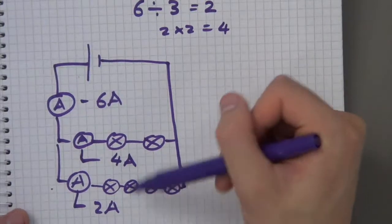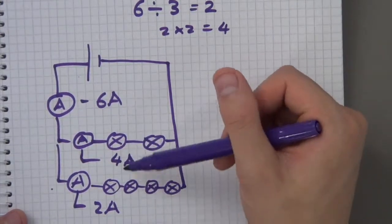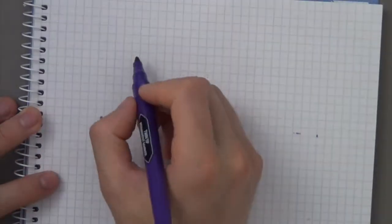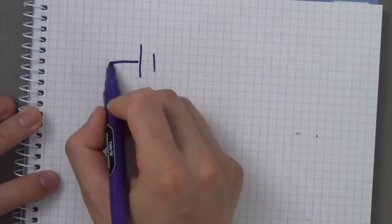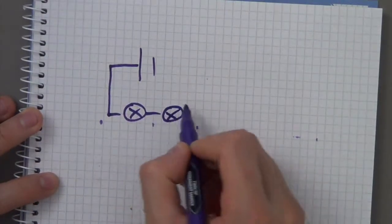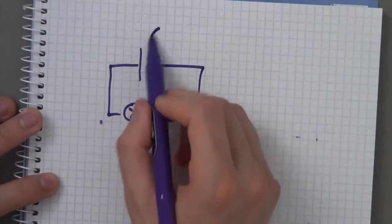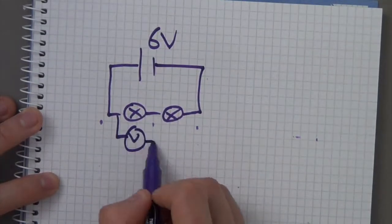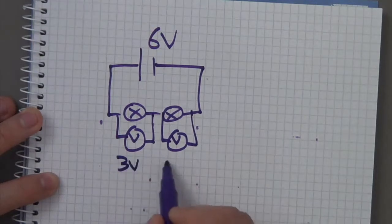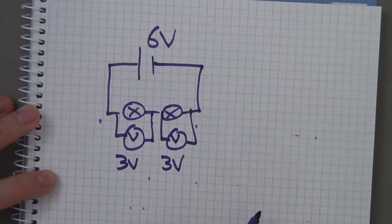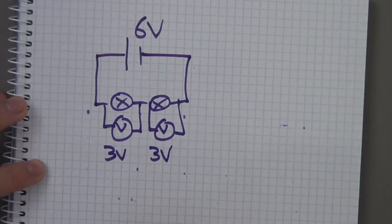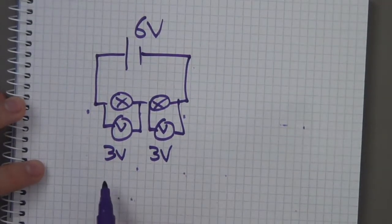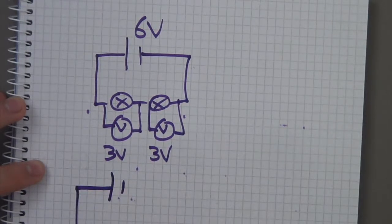Now for voltage — this is a recap from an earlier video. If the supply is six volts and I have two bulbs in series with a voltmeter across each, each voltmeter reads three volts and three volts. Hopefully that's straightforward.